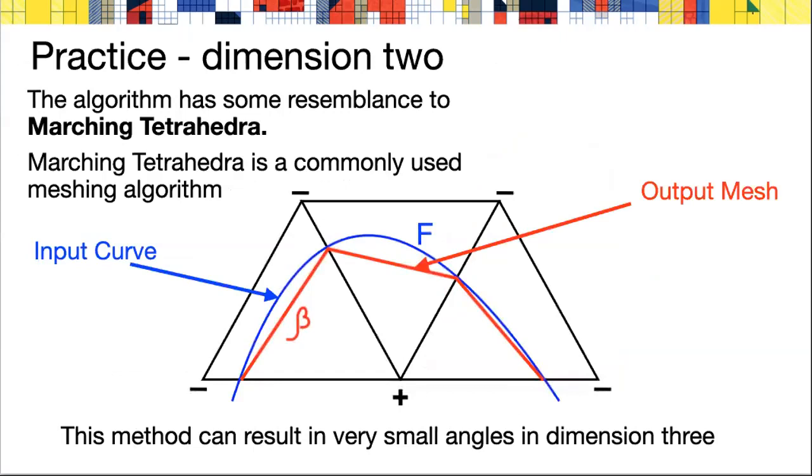Let's practice understanding the GradNormal algorithm by looking at what it does in dimension 2. I'm going to compare it to a well-known algorithm called marching tetrahedra that it has some resemblance to, and I'll point out how it differs.